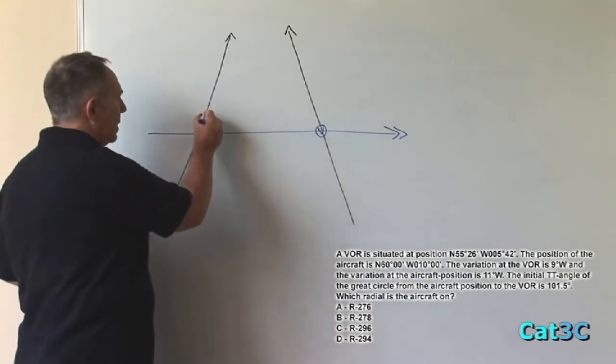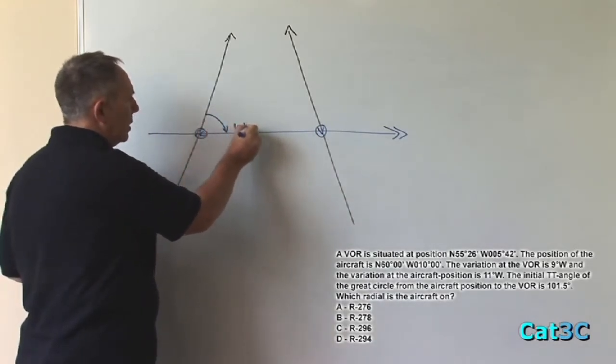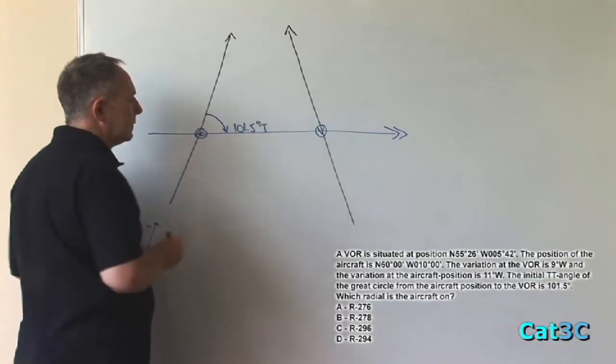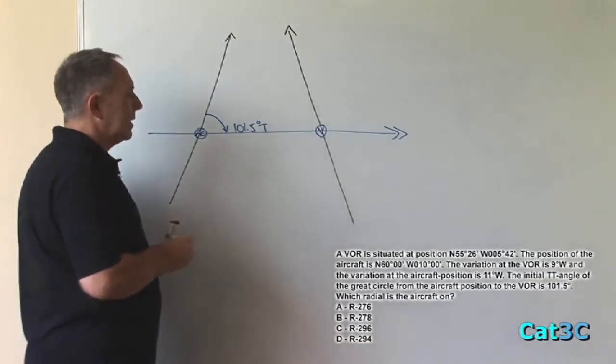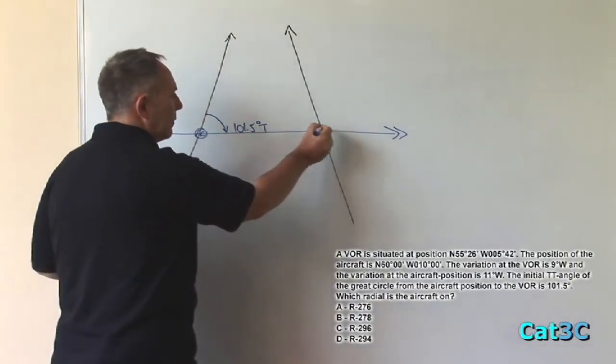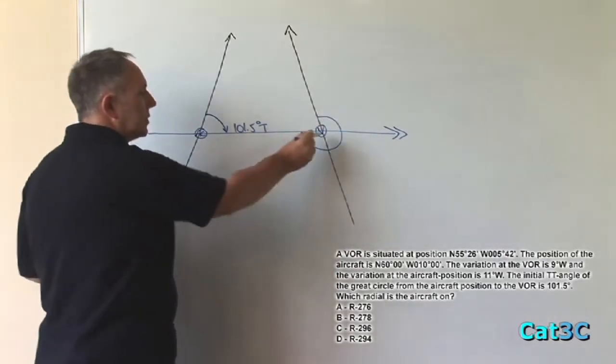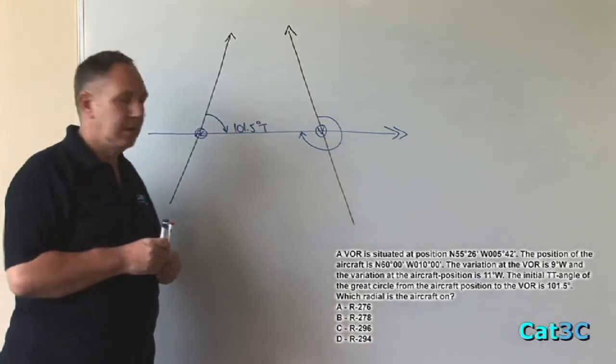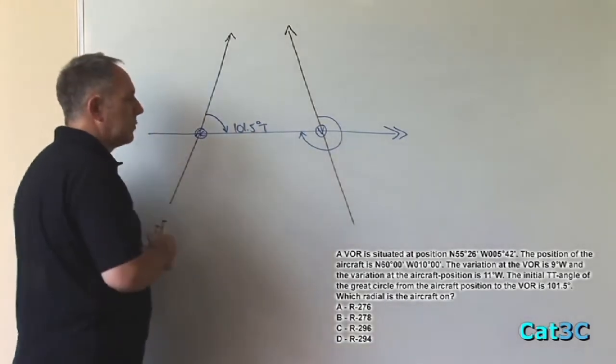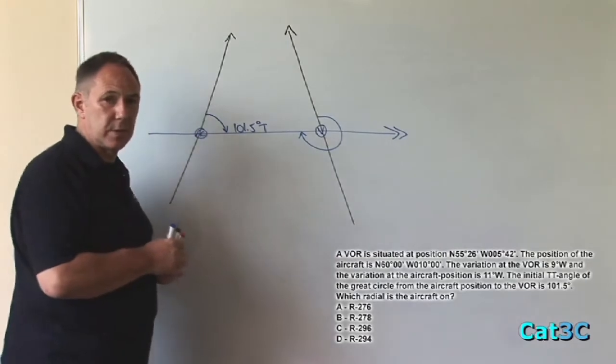The bearing at this position is 101.5 degrees true. We have to calculate the bearing from the VOR back to the aircraft. Also we must calculate that in degrees magnetic. But before we calculate that in degrees magnetic we're going to work it out in degrees true.